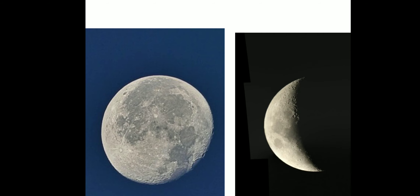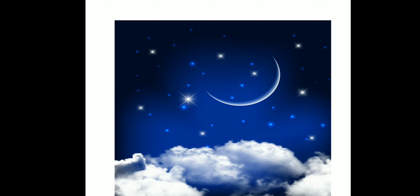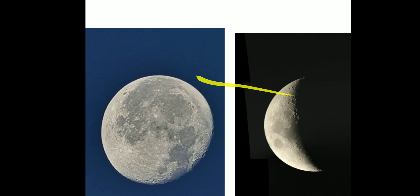Now we are going to see about moon and stars. Moon is bright and keeps changing its shape every day. Sometimes we see the full moon that is round and very bright. At other times, we see only a part of it. Stars are the small twinkling objects in the night sky. They are actually big balls of fire. They look small because they are far away from our earth. Moon is closer to the earth than the stars.